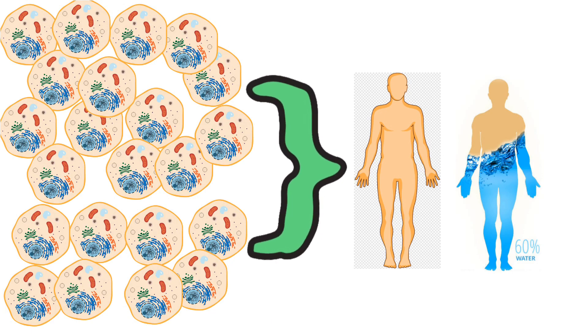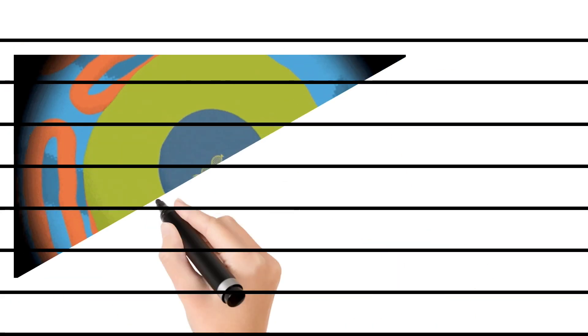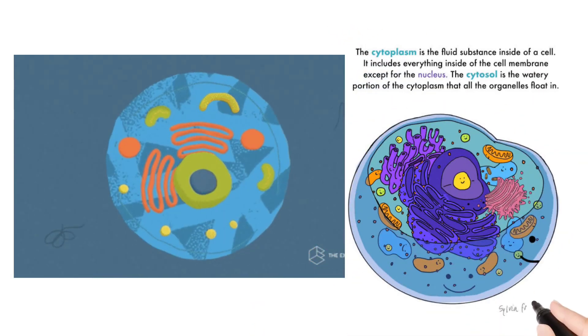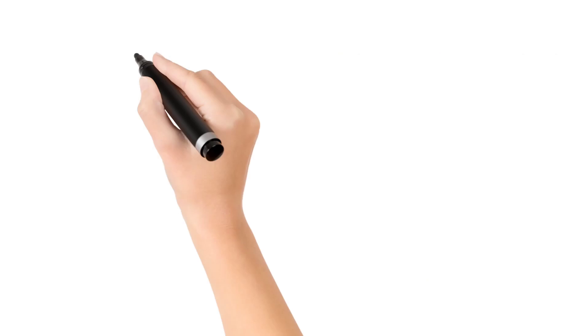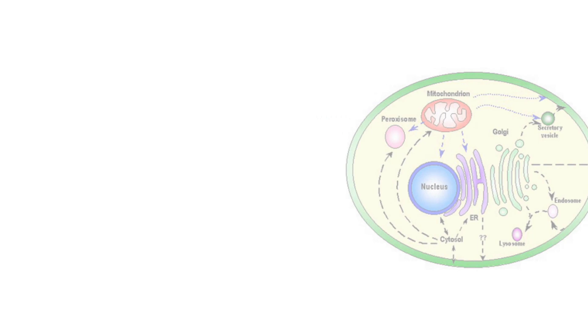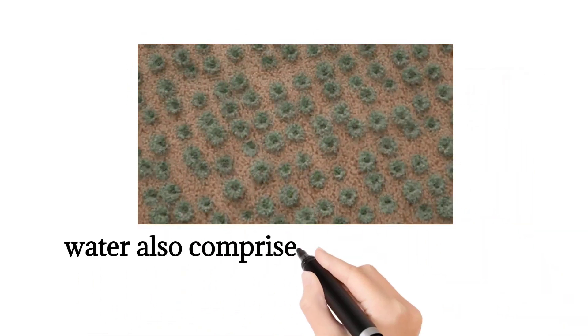Since all of the cells are always constantly working, all of them require water to maintain their environment and to carry out their work efficiently. Not just this, but all the secretions in our body and all the glands have watery environments in them.